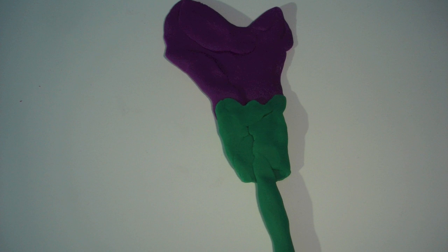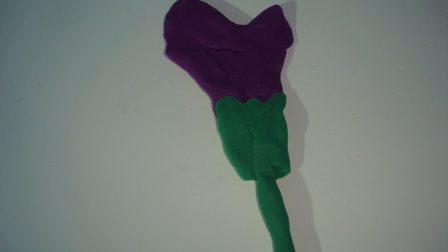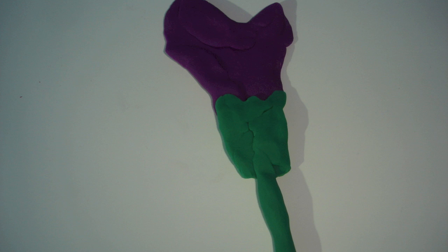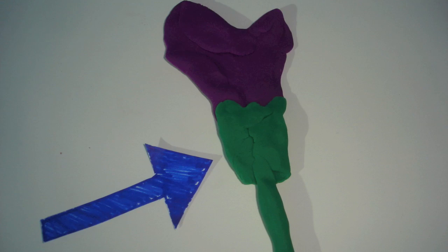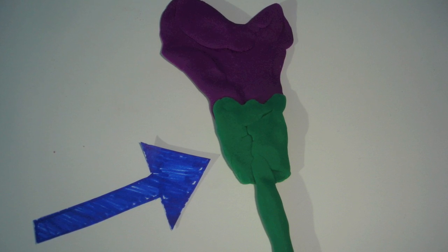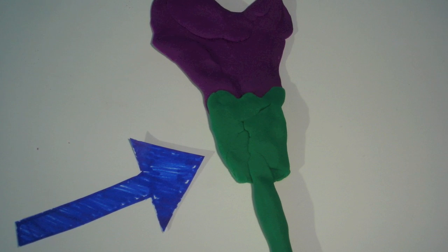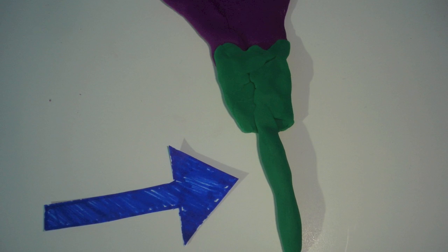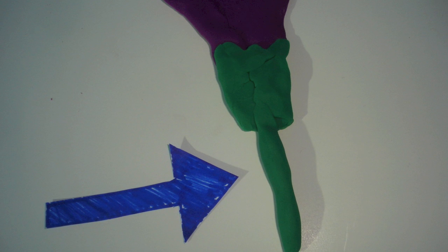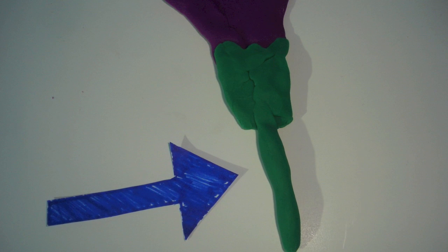This is another view of the lily that we are looking at. This is the receptacle of the flower. It's the part where all flower parts are attached. This is the petal. It is the stem of the flower and it holds the flower up.